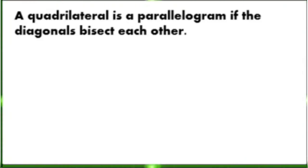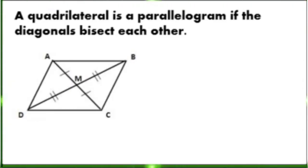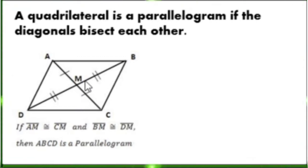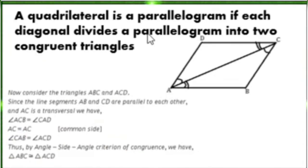Fourth condition: a quadrilateral is a parallelogram if the diagonals bisect each other. We have here quadrilateral ABCD. If line segment AM is congruent to line segment CM, and line segment BM is congruent to line segment DM, then quadrilateral ABCD is a parallelogram.